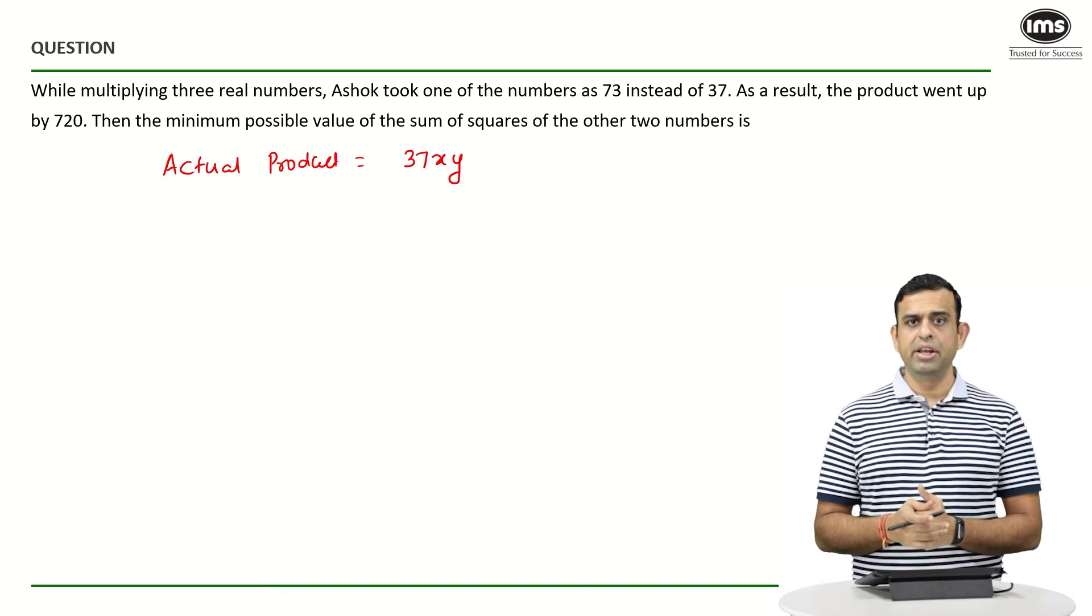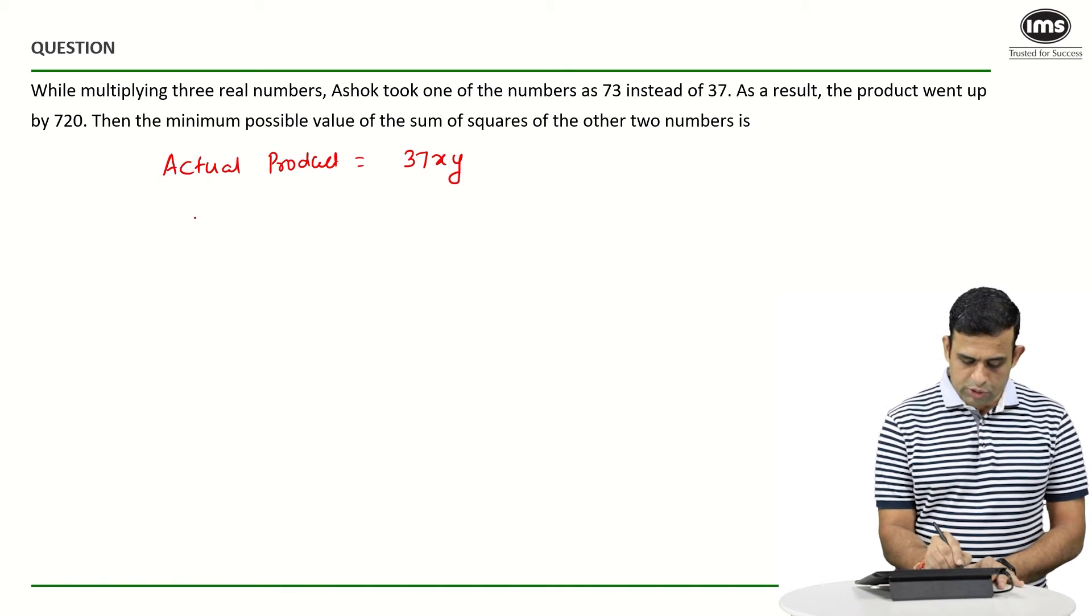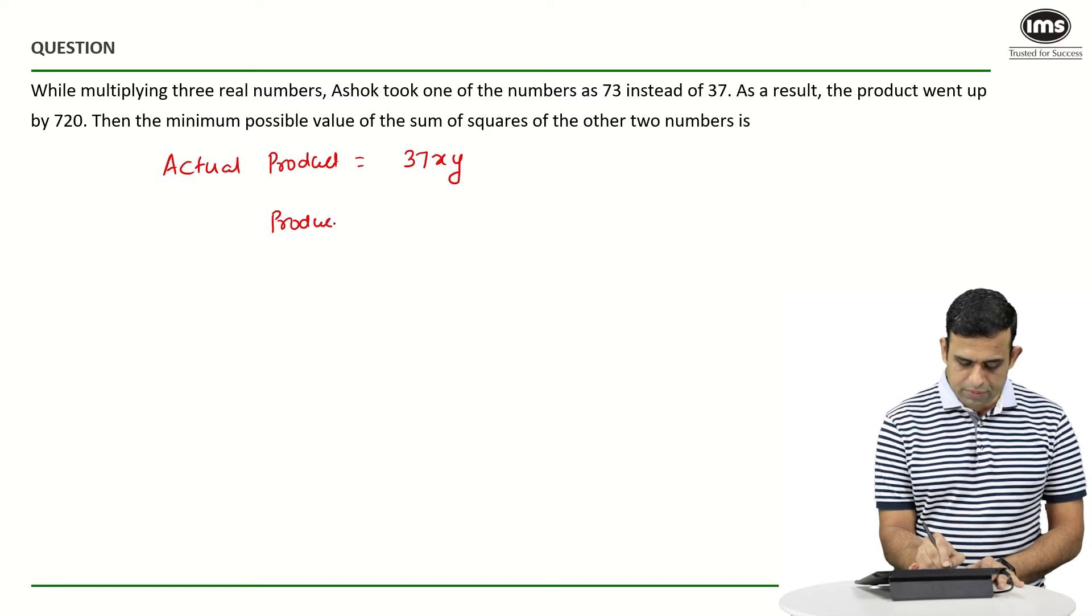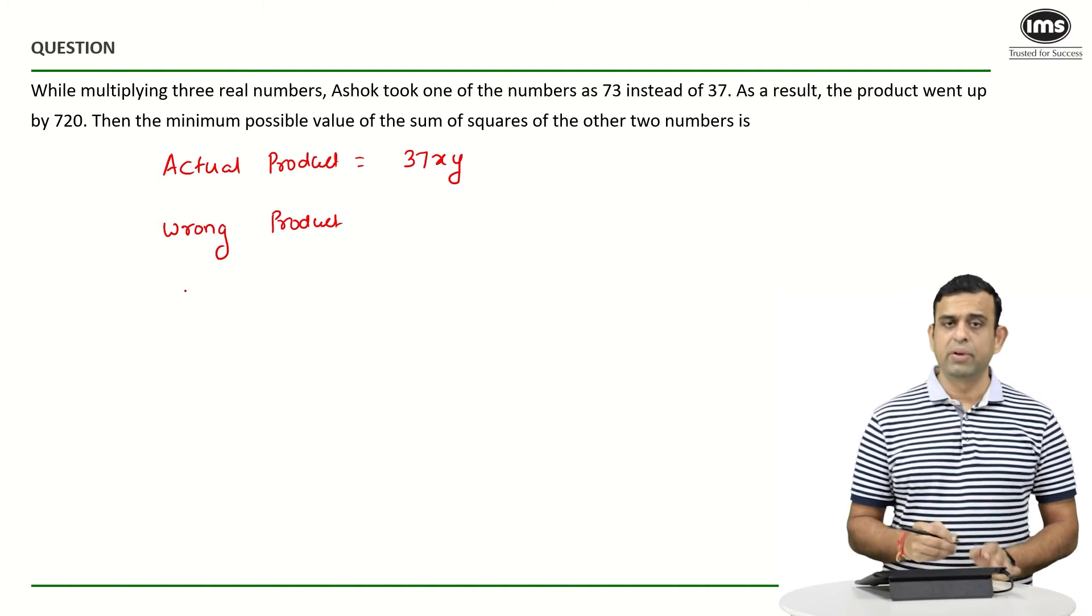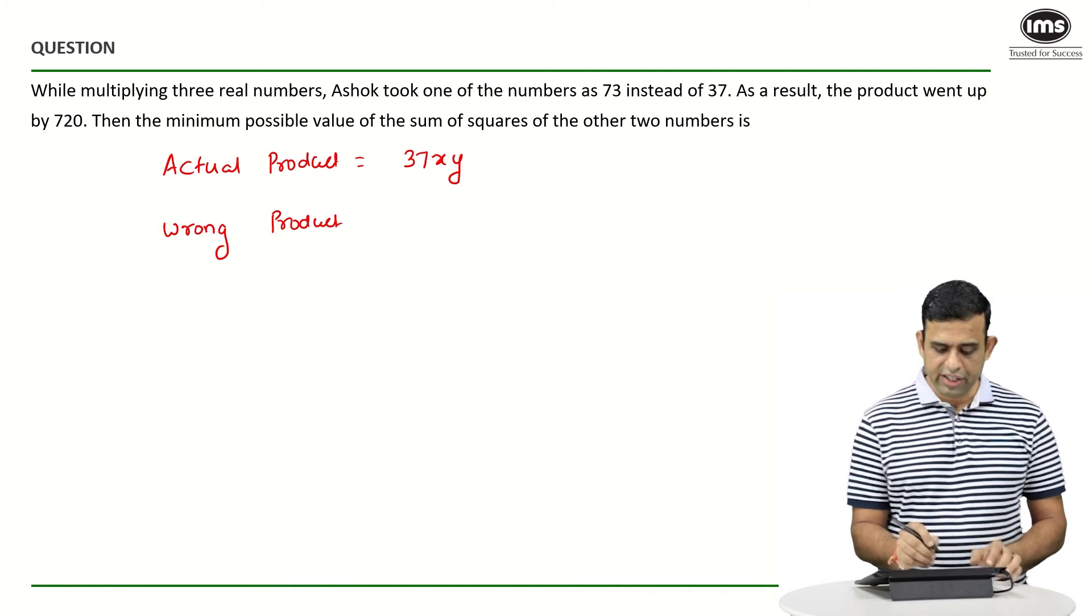But what he has done in reality, he has made a mistake. So the product which was a wrong one, he multiplied the numbers x, y, and the number 73.